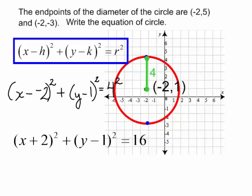The equation of this circle is (x + 2)² + (y - 1)² = 16.